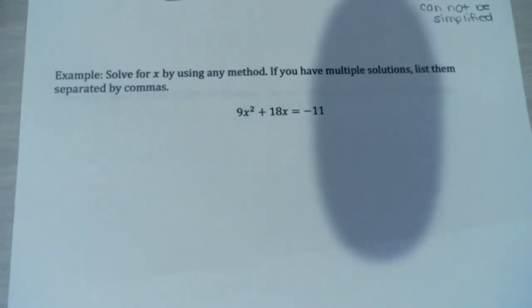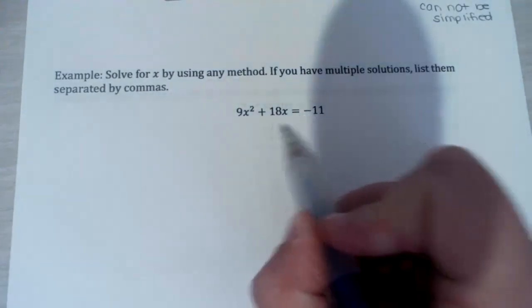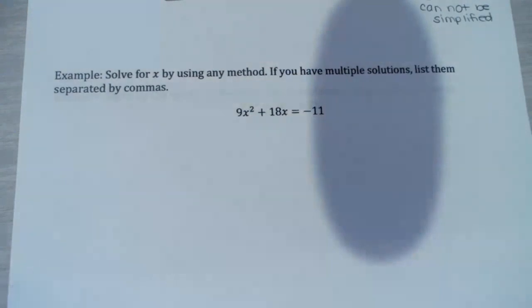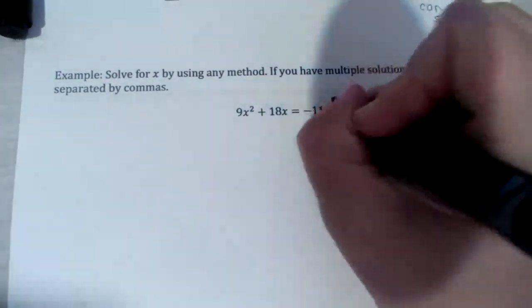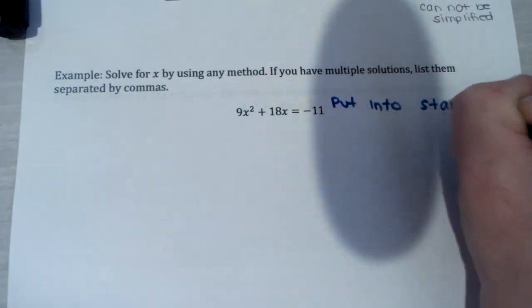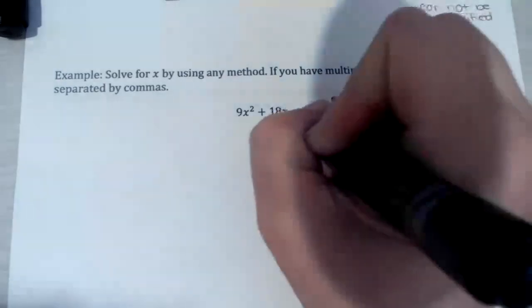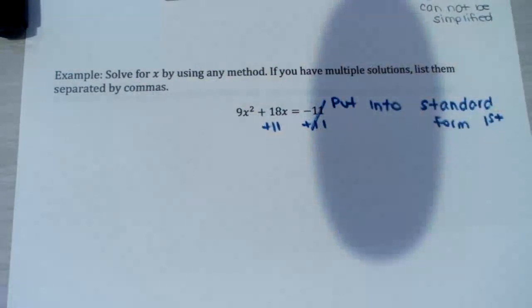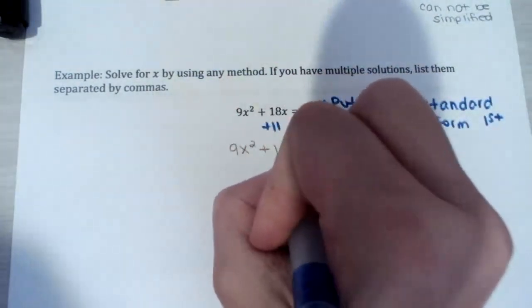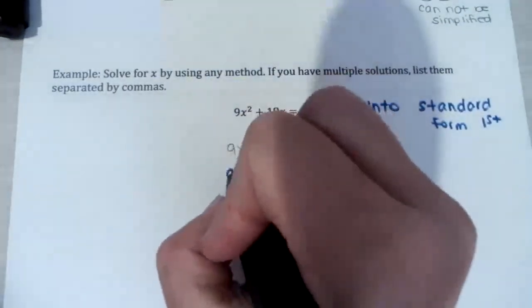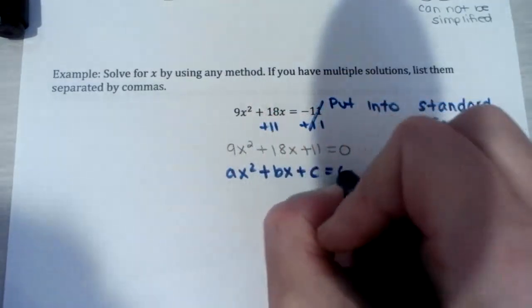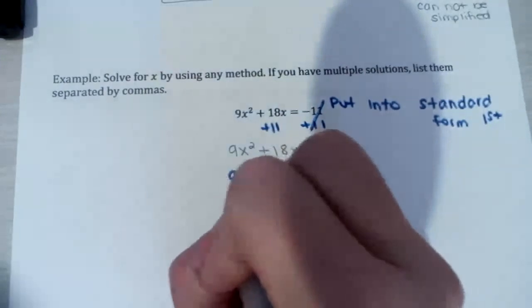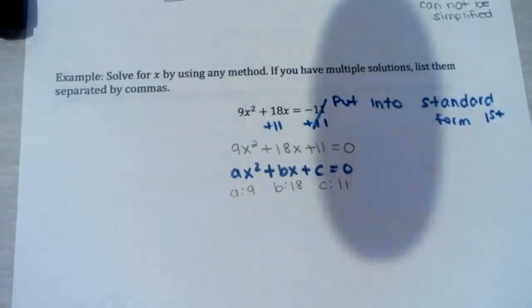Next: solve for x using any method — we'll use the quadratic formula. We have 9x squared plus 18x equals negative 11. This is not in standard form, it's not set equal to 0. So add 11 to both sides: 9x squared plus 18x plus 11 equals 0. Now it's in standard form. So a is positive 9, b is positive 18, and c is positive 11.